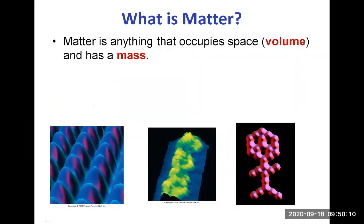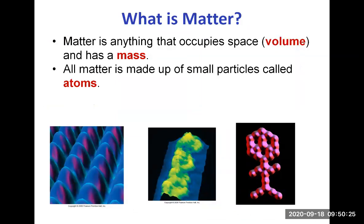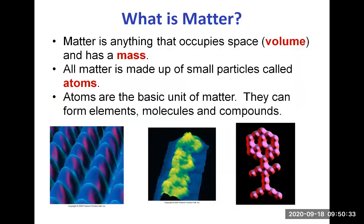So what is matter? The definition of matter is that it's anything that occupies space, has a volume and has a mass. And matter is made up of small particles called atoms. We've seen that atoms are the building blocks of matter. Atoms are the basic unit of matter and they can form elements, molecules and compounds.